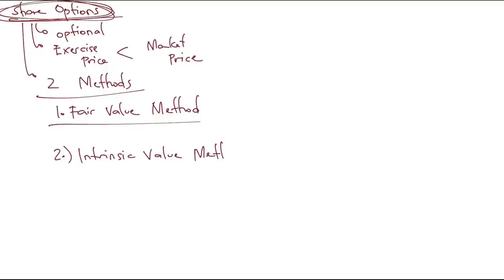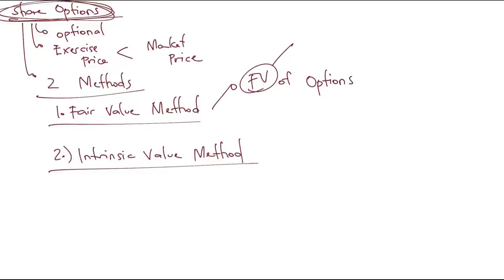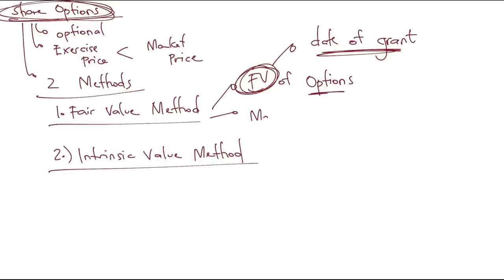The difference between the two methods: under the fair value method, the compensation is equal to the fair value of the share options on the date of grant — so the price is fixed. This is the method mandated by IFRS 2, meaning we are required to use the fair value method.